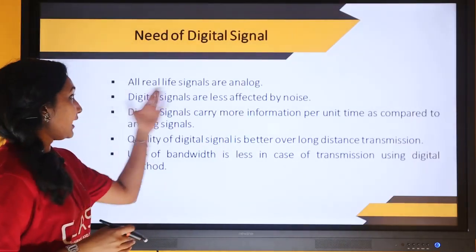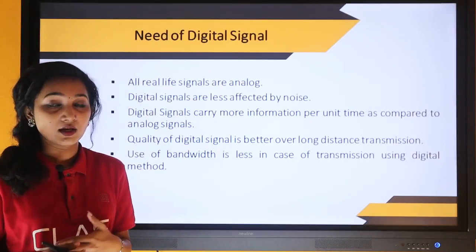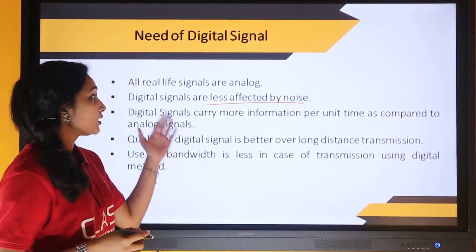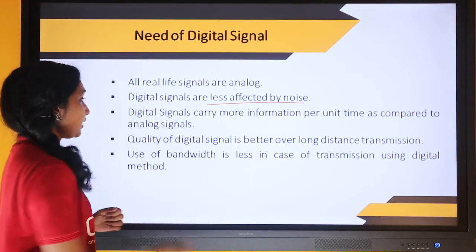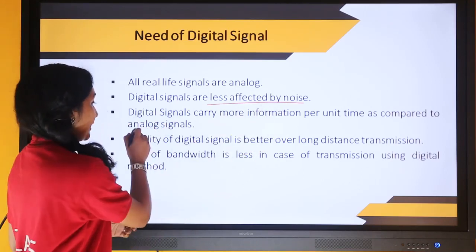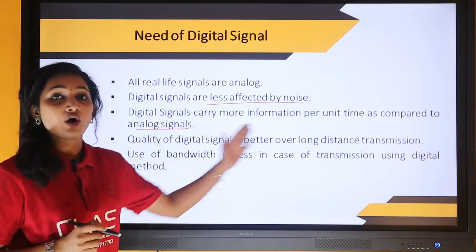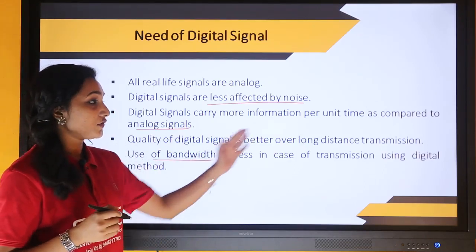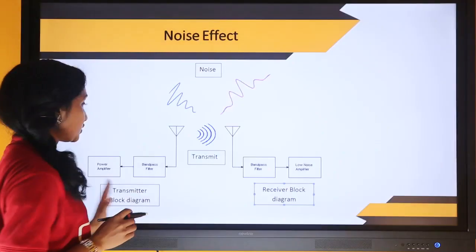Most of our real-life signals are analog in nature, but for plenty of applications we prefer digital signals over analog. This is because digital signals are less affected by noise, which is why in communication systems we prefer digital signals. Also, digital signals carry more information per unit time compared to analog signals, their quality is better over long-distance transmission, and bandwidth usage is less when using digital transmission methods.